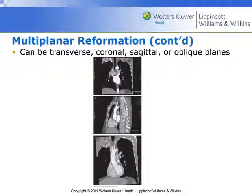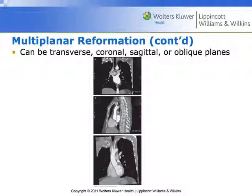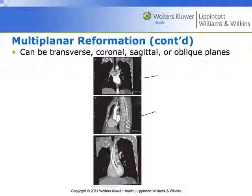Here are some examples of multi-planar reformats. In particular, these look like they're imaging the aorta or maybe the heart. This view here is coronal, this one is sagittal, and this is an oblique view that allows us very nicely to see almost the entire aortic arch.